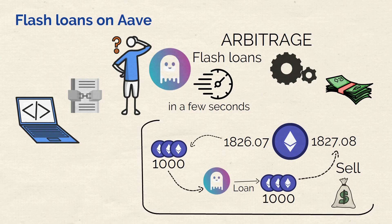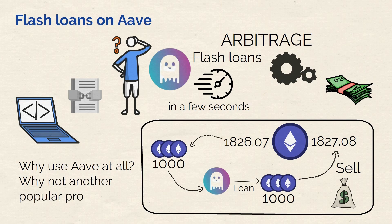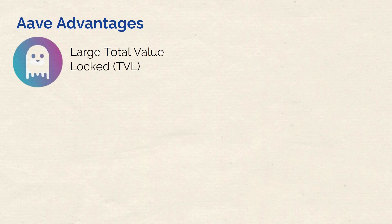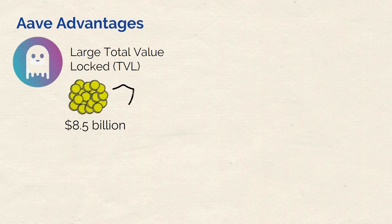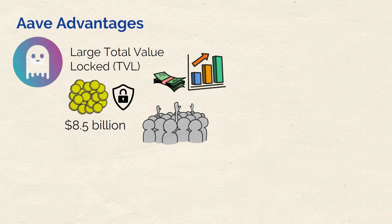So that was all about how Aave works. Why use Aave at all instead of another popular project? Let's look at some advantages. Aave's appeal lies in several key strengths unique to its platform. The first advantage is its large total value locked, or TVL. Aave boasts around $8.5 billion in locked value, which makes it a giant in the DeFi space. This impressive TVL shows users' trust in Aave as well as its potential for significant returns.